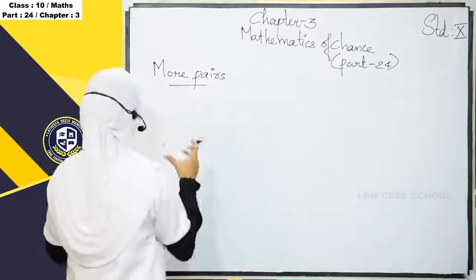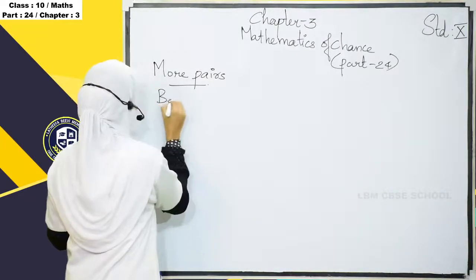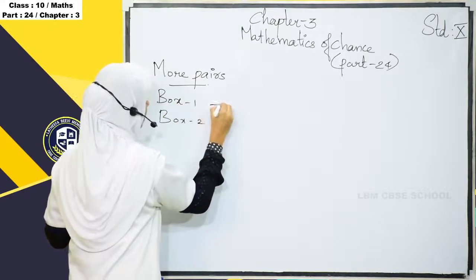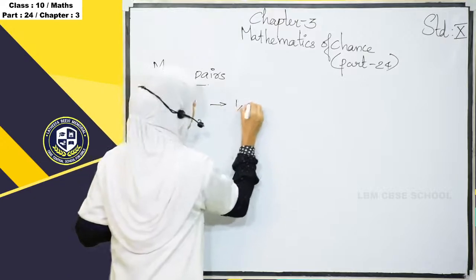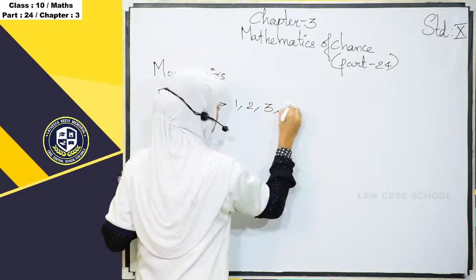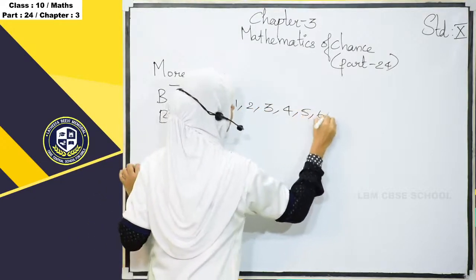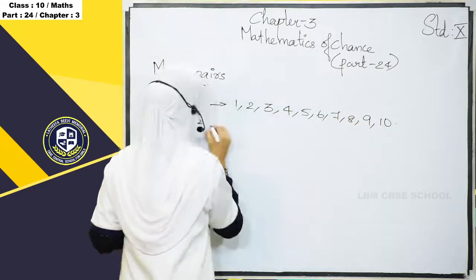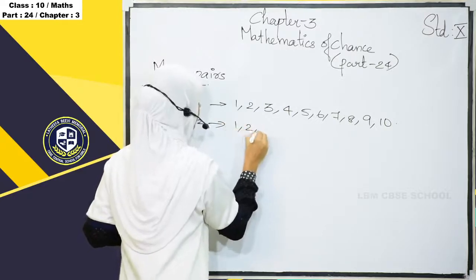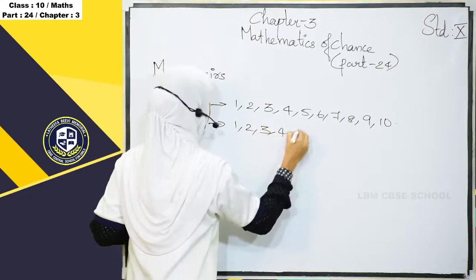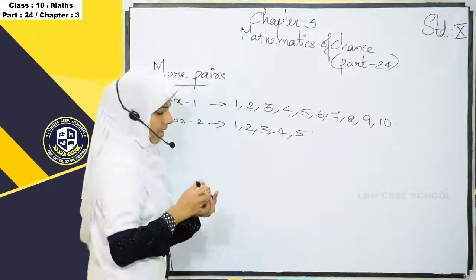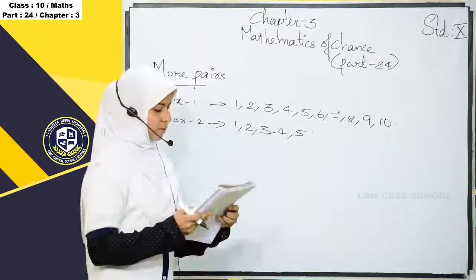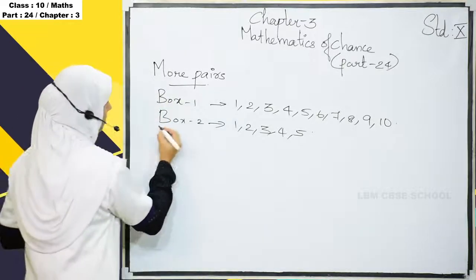The first box is Box 1 and Box 2. In Box 1 there are 10 slips, and in Box 2 there are 5 slips. We have to find the probability of both being odd.